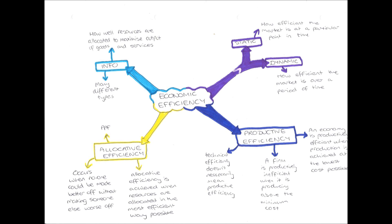Finally, we have allocative efficiency. Allocative efficiency is achieved when resources are allocated in the most efficient way — when everything in the economy is being used in the best possible way. This occurs when nobody could be made better off without making somebody else worse off, because making someone better off requires giving them more resources, which must be taken from someone else. When working at allocative efficiency, the economy is operating on its PPF.